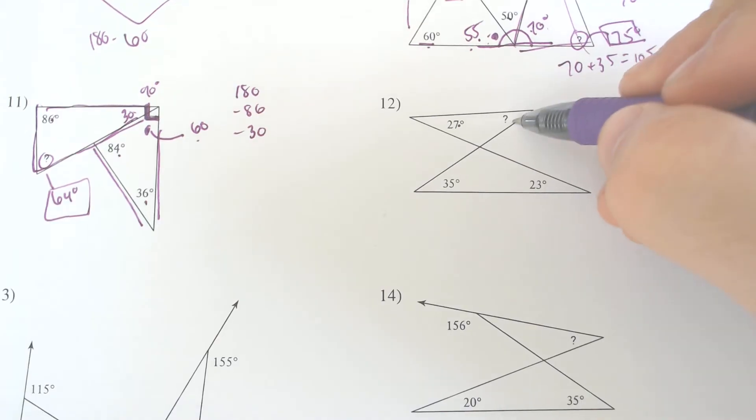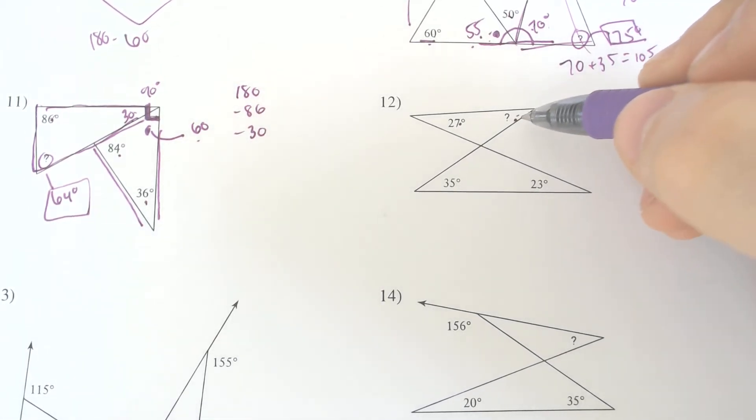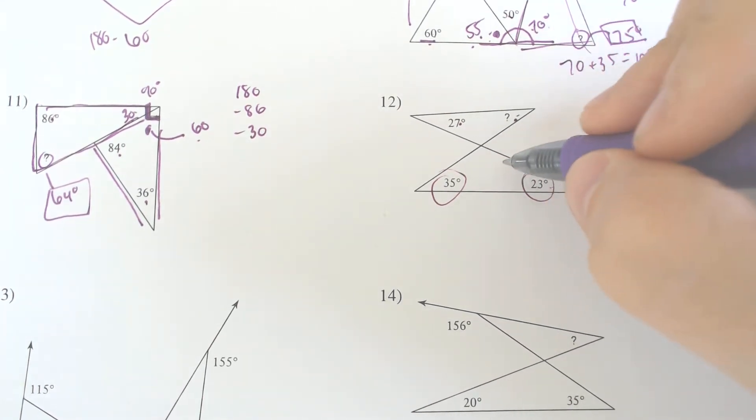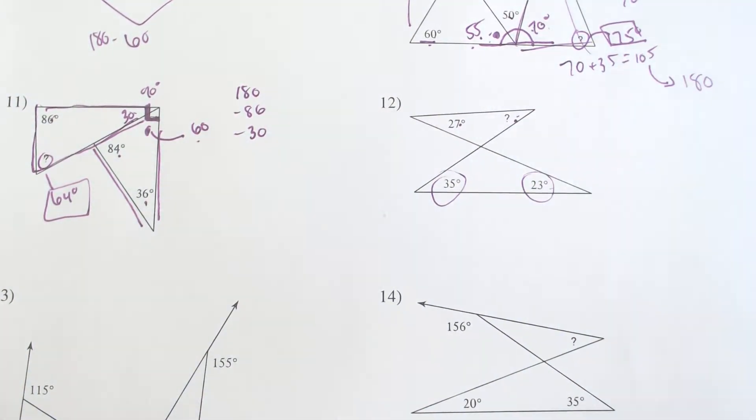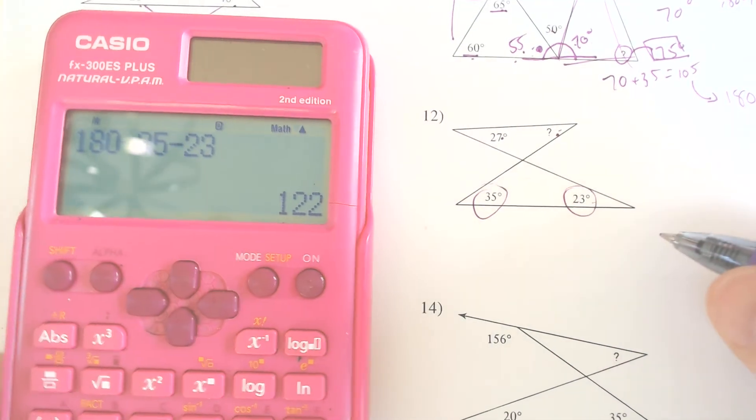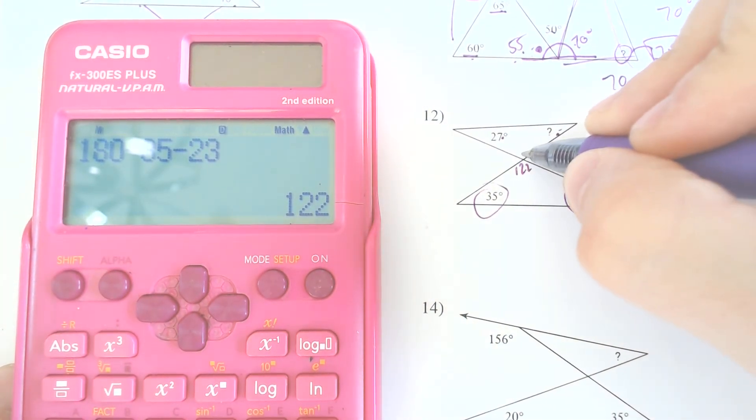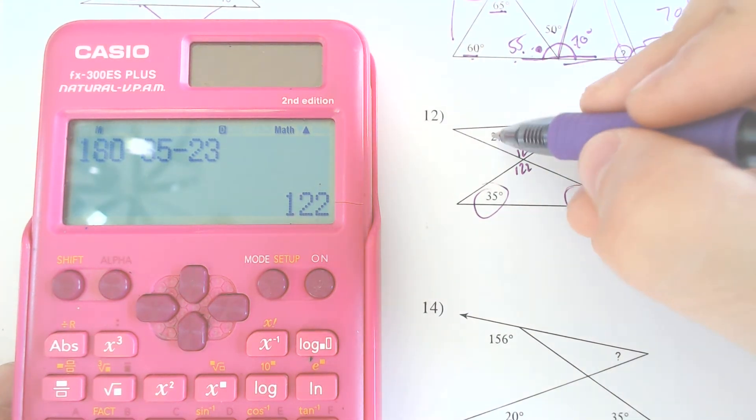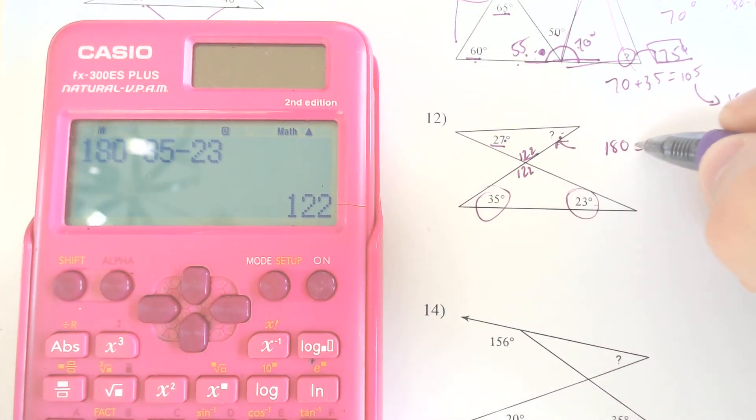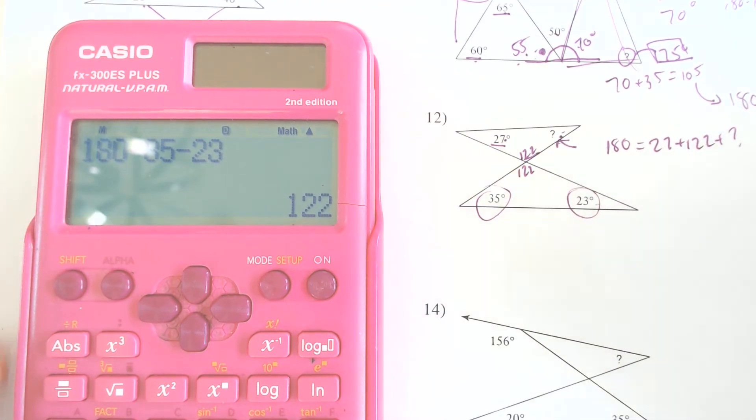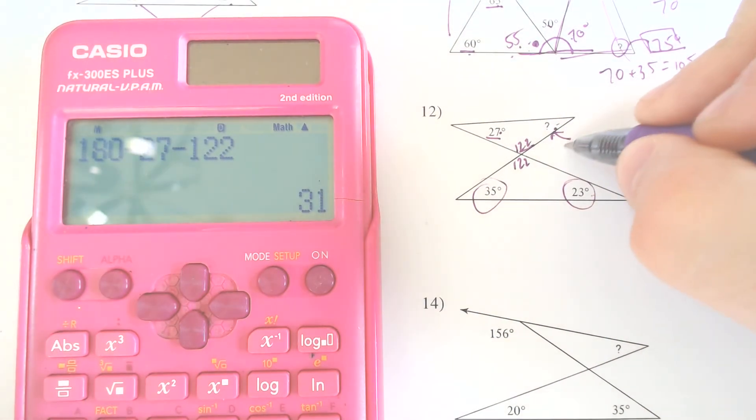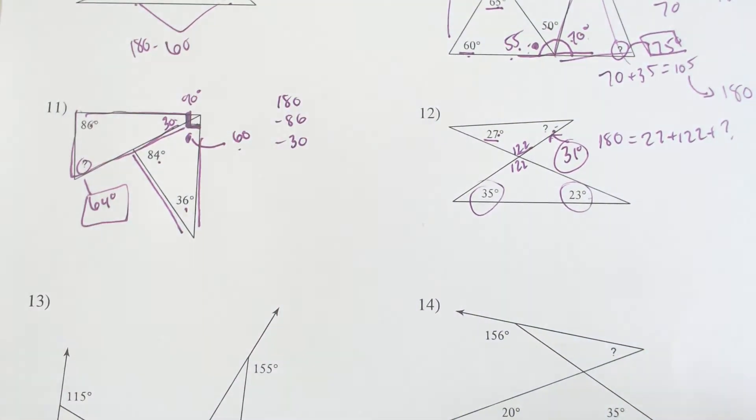Here we go. We got 27 here. We got question mark there. It's not going to be 27, most likely, as much as we want it to be. We got to focus on the smaller, not the smaller, the bottom triangle here. We got 35. We got 23. You got to combine those and subtract them from 180. 180 minus 35 minus 23 ends up being 122. We got 122 here. Vertical angle, 122 there. You got two angles in a triangle. Add them up and find the third. So 180 must equal 27 and 122 and that question mark. So you can add them and subtract them or you can subtract them right away. Minus 27 minus 122 ends up being 31 degrees.